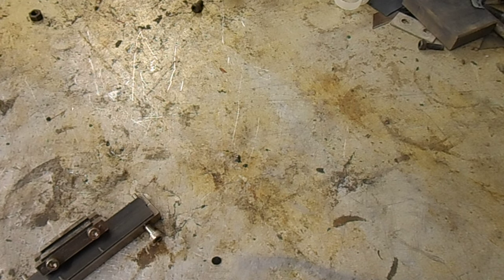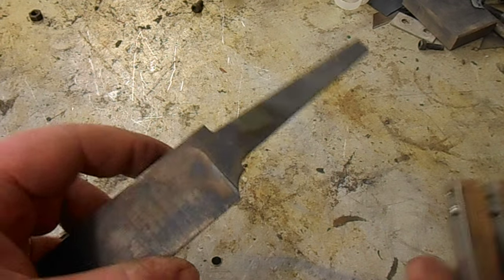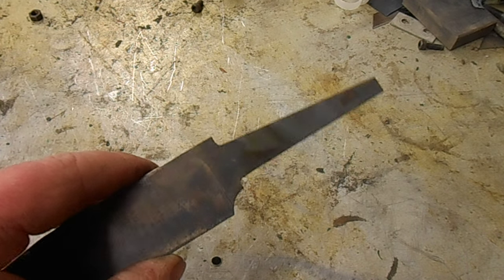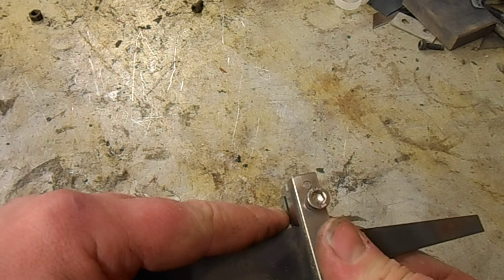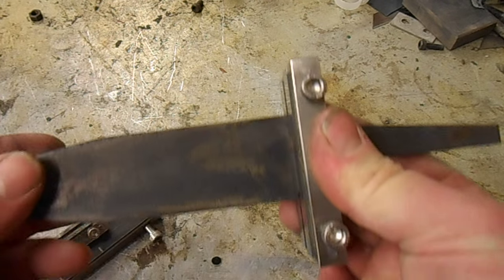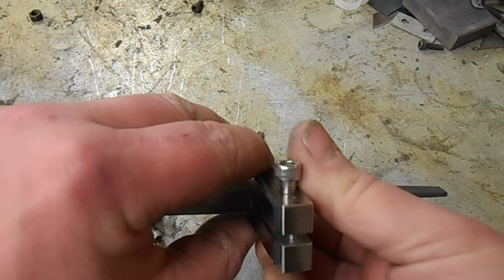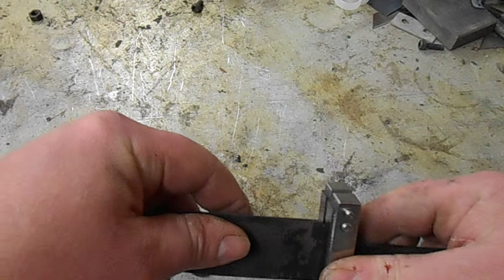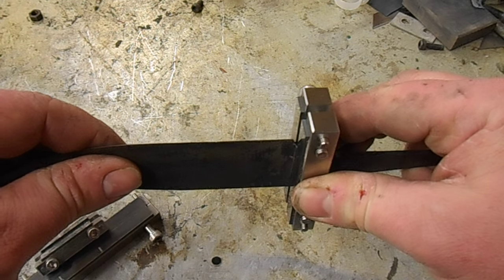Now for those who don't know what a file guide is or what it can be used for. The two main things I guess that you'd use a file guide for in knife making would be to clamp the file guide on your Ricasso, and then you can go to the grinder or with a file, depending on how you do your knives.